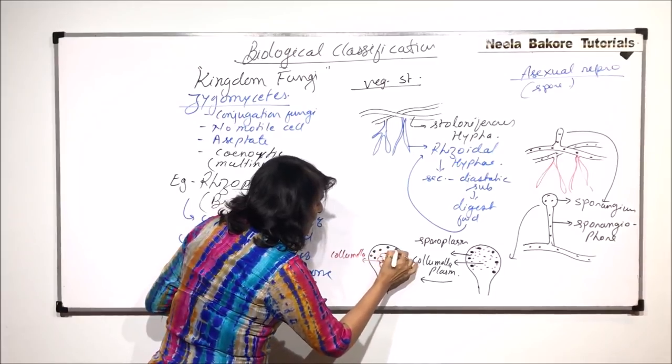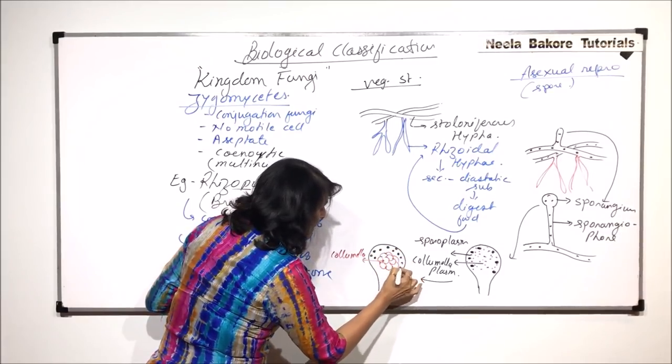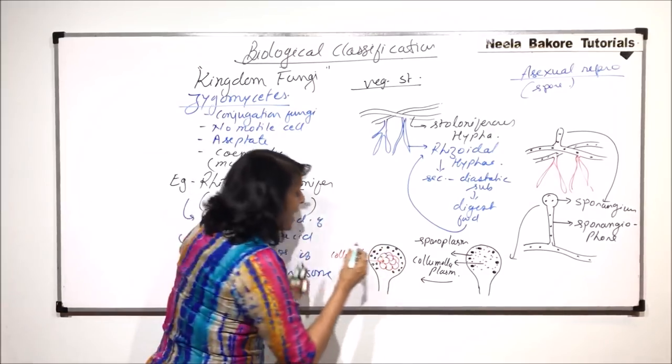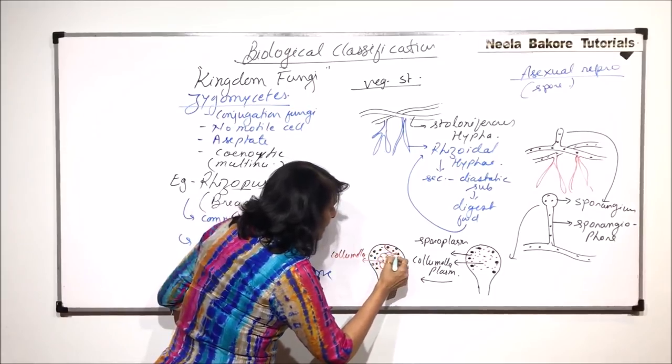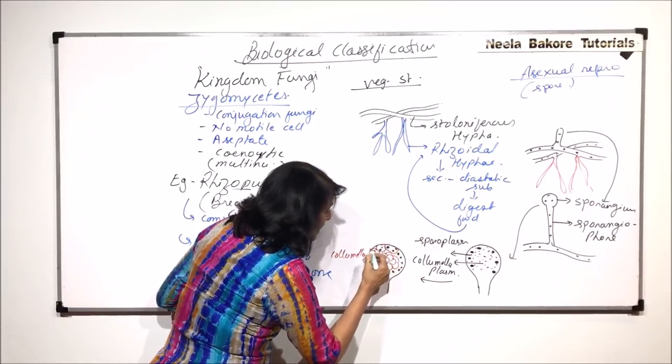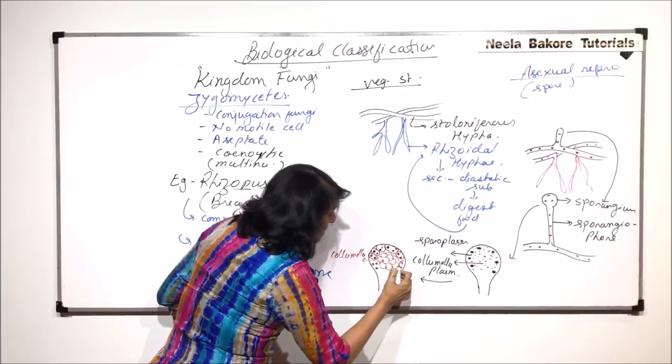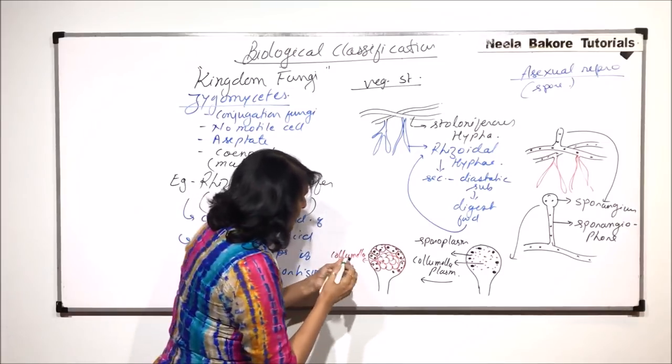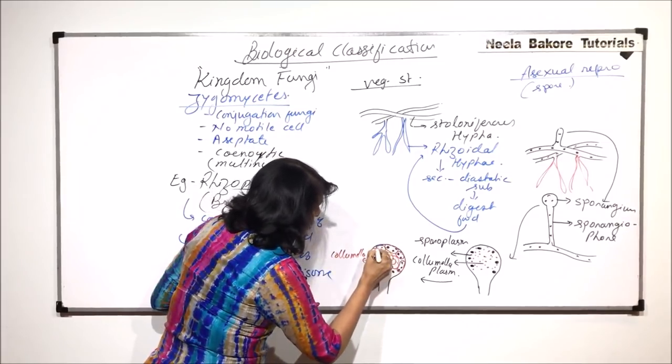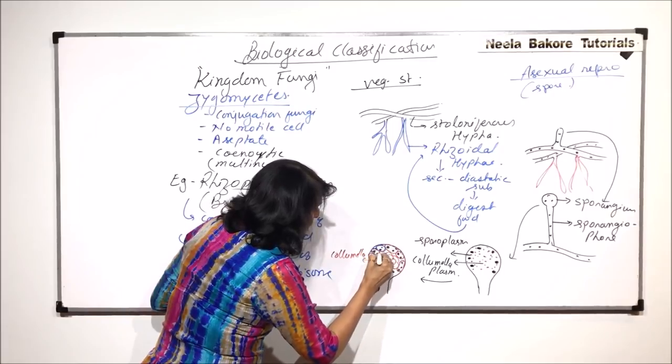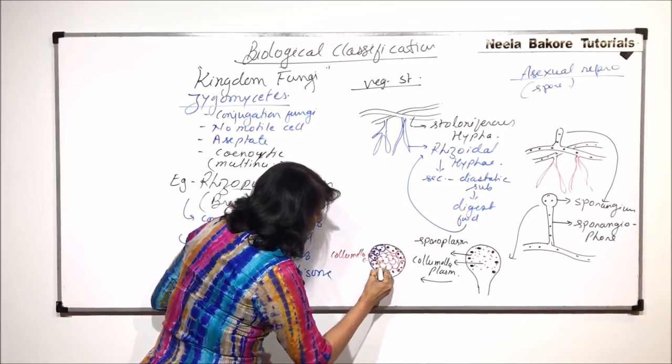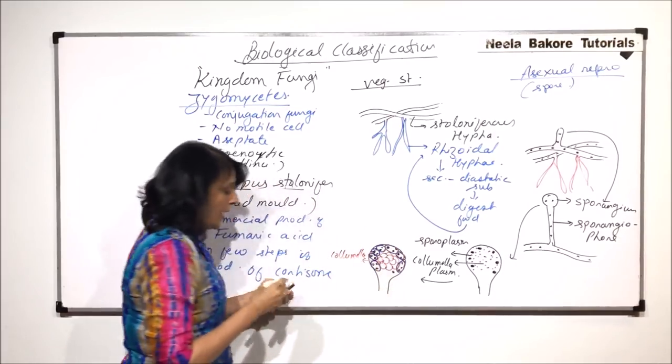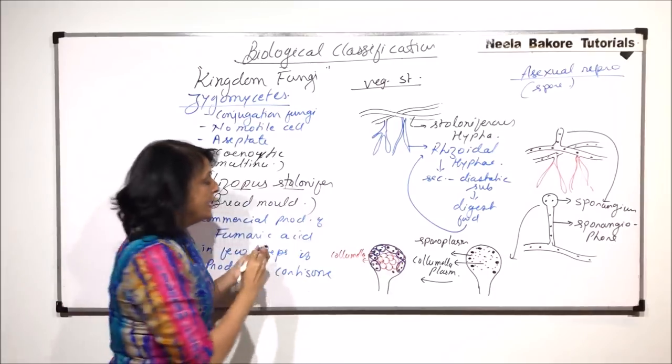There would be many nuclei which would be found in the peripheral cytoplasm. Many nuclei would get surrounded by little cytoplasm and a membrane would be secreted around it. Now these multi-nucleated spores are formed. In the outer part, we would be seeing certain membranous structures and these structures may have one, two or many nuclei.